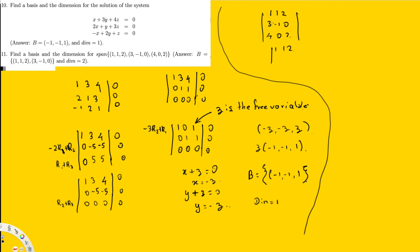To eliminate the entries below the first pivot, multiply the first row by -3 and add to the second row: -3R1 + R2 gives 0, then -3+(-1) = -4, and -6+0 = -6. Then eliminate the third row by multiplying the first row by -4 and adding: -4R1 + R3 gives 0, then -4+0 = -4, and -8+2 = -6.